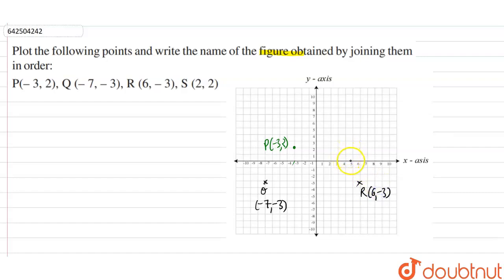Then, S point is 2 comma 2. So, S point is 2 comma 2 means x coordinate 2, y coordinate 2. This is point S which is 2 comma 2.